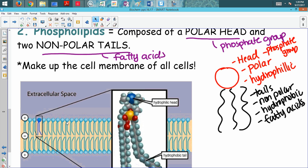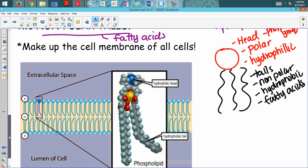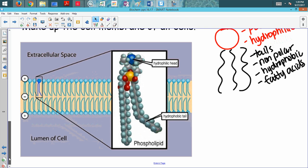What happens is because the tails hate water, they hide in the middle and stay away from water. The heads love water, so they face the outside of the cell and the inside of the cell where there is water. These are called phospholipids, and they surround and make up every cell of every organism.